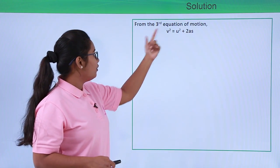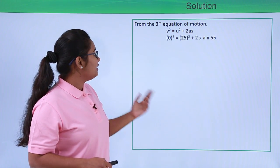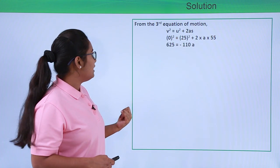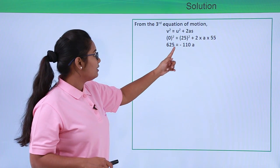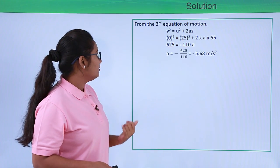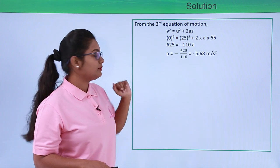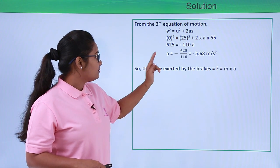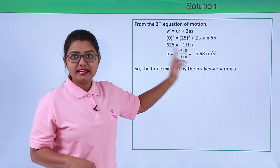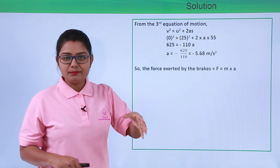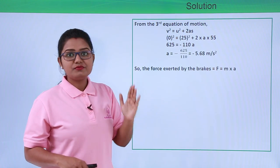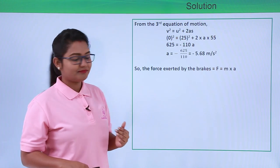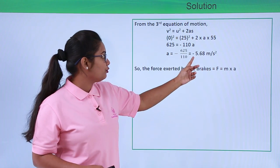We have all values except a. Substituting: 0² = 25² + 2 × a × 55, which gives 0 = 625 + 110a, so a = −625 ÷ 110 = −5.68 meters per second squared. The negative acceleration indicates that the brakes apply a force in the direction opposite to the motion of the car, which brings it to a stop.